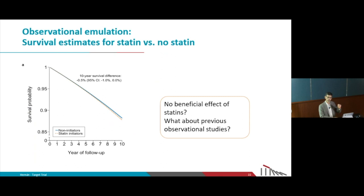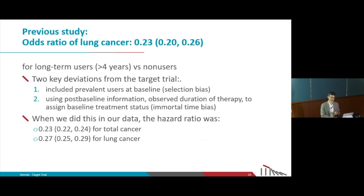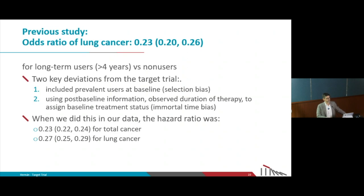Another paper found a very strong inverse association between statins and cancer risk — an odds ratio of 0.23 for lung cancer. Think about what this means: there is a publication stating that people who use statins for more than four years have a 77% lower risk of lung cancer compared with people who don't use statins. How is that even possible?